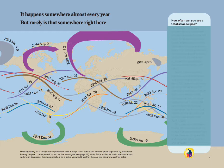It happens somewhere almost every year, but rarely is that somewhere right here. This map shows the paths along which totality is visible for all the total solar eclipses from 2017 to 2045. A total solar eclipse does indeed happen somewhere about every year or two, but it's fairly rare in any particular place. For example, the United States had one in 2017 and another in 2024, but if you miss those, your next good opportunity is not until 2045.